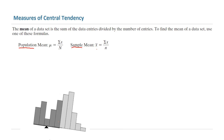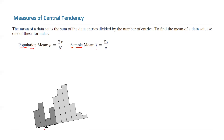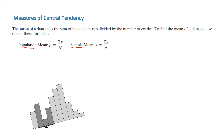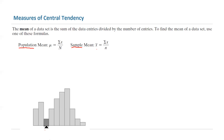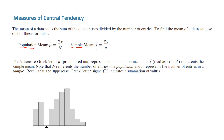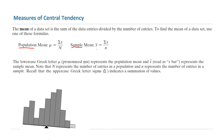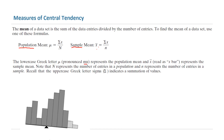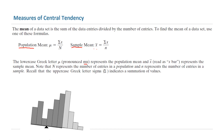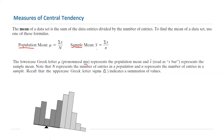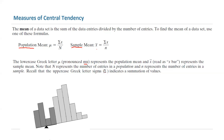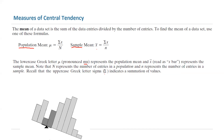Remember that to find the measure of central tendency, you're looking for this number on the horizontal line. This represents the mean, mode, or the median. If you're using a population, you're going to use the Greek letter mu. If it's a sample, you're going to use x bar. Sigma shows the summation of the values.